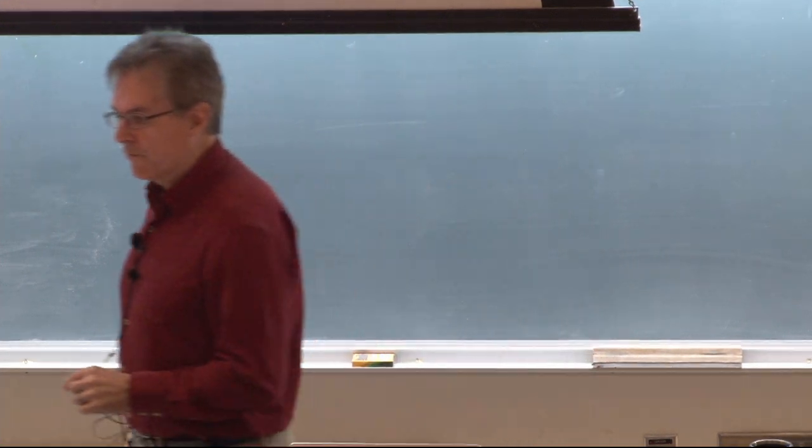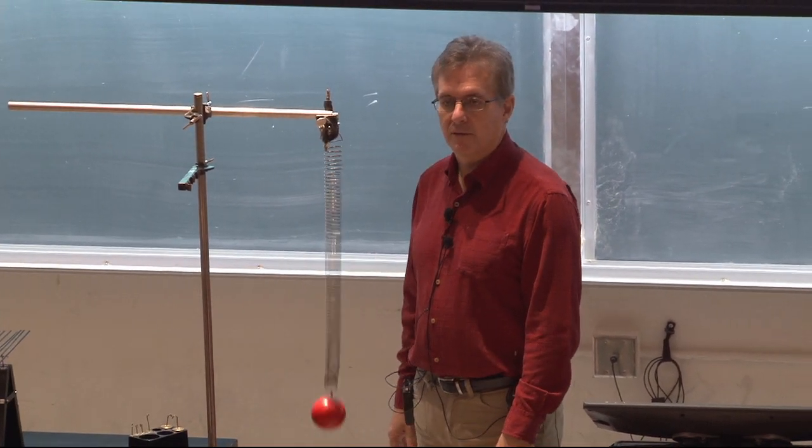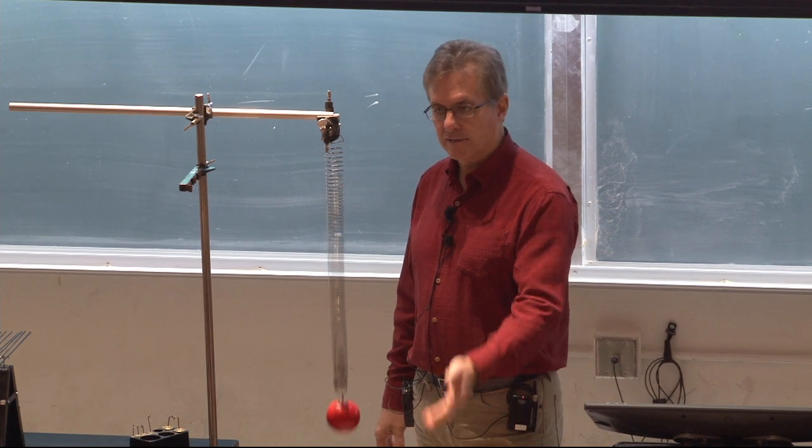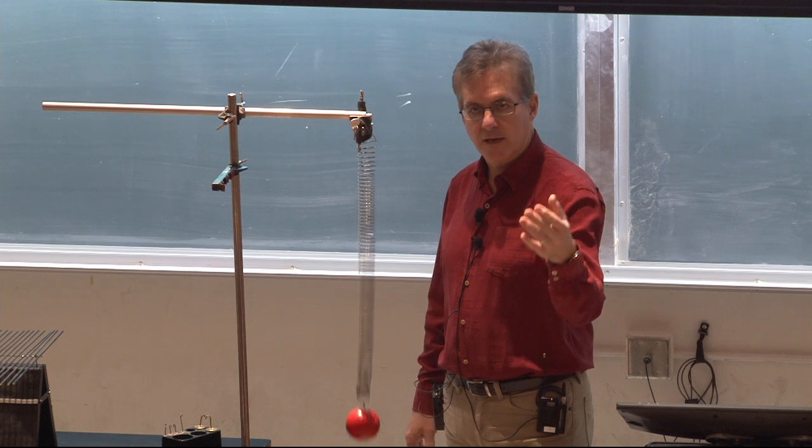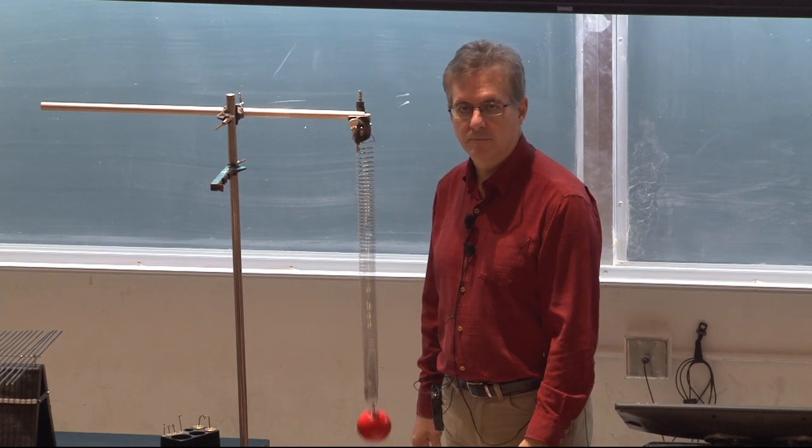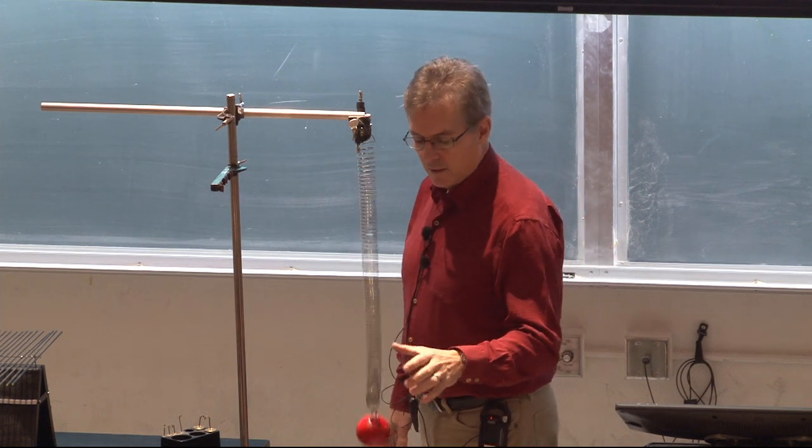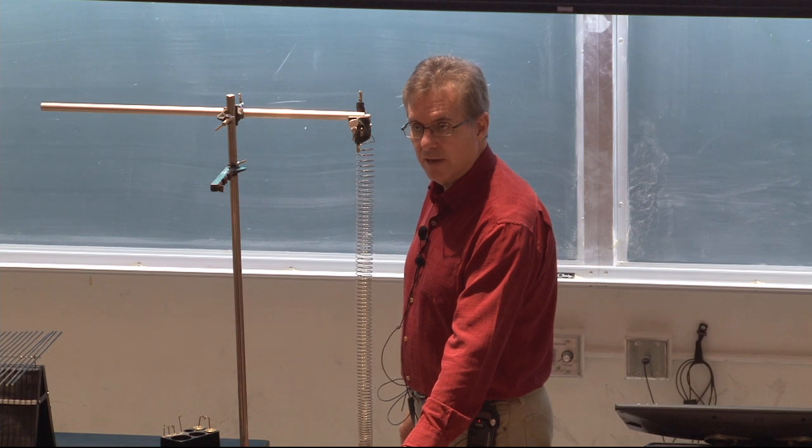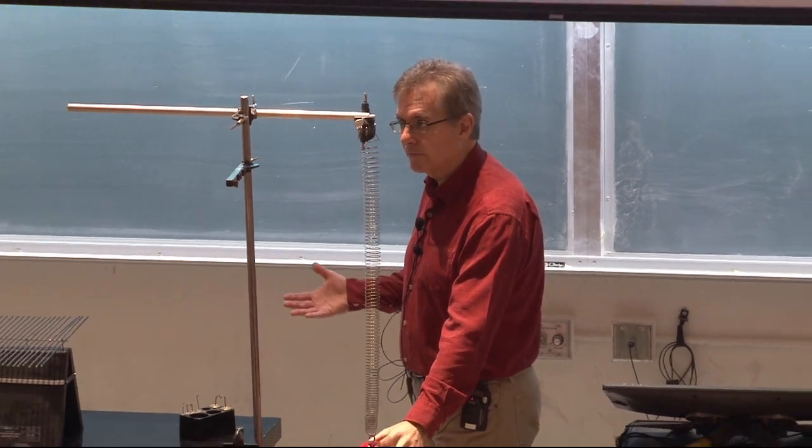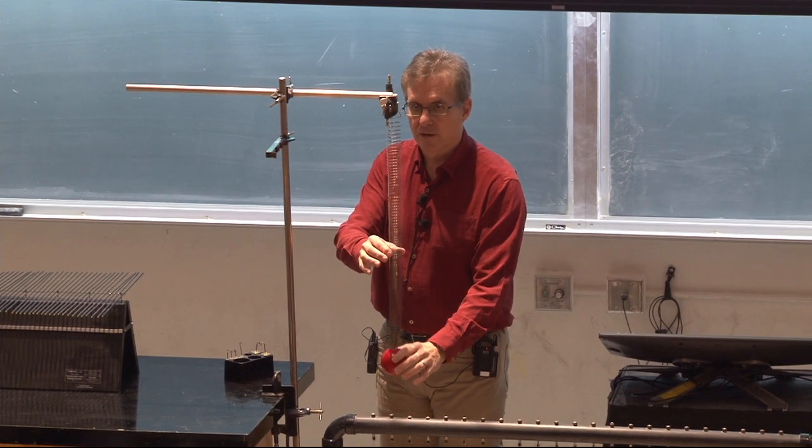We remember from back in physics 7b, when you have an oscillator like this, it has some total energy. The total energy is not just the kinetic energy of motion of the ball, there's also potential energy being stored in the spring itself. Obviously when the ball reaches the bottom of its travel here, it has zero velocity and must have zero kinetic energy, so all of the energy is then in potential energy.